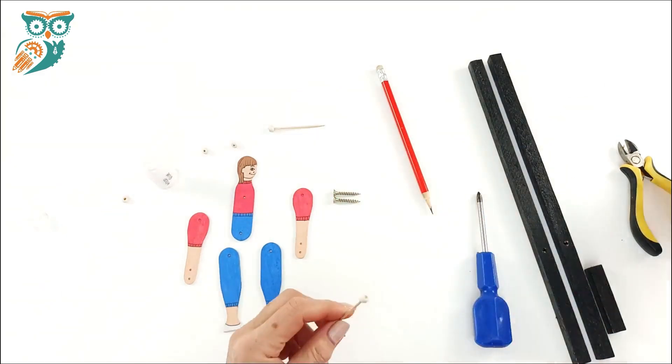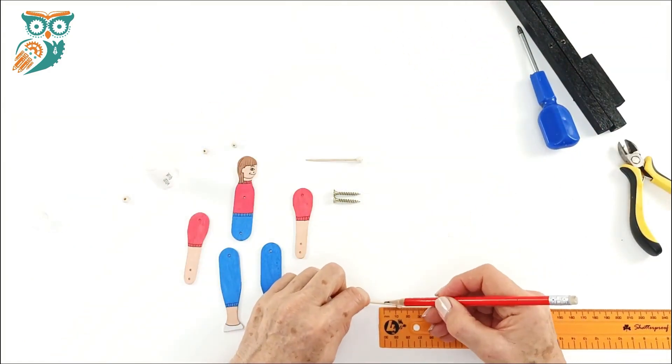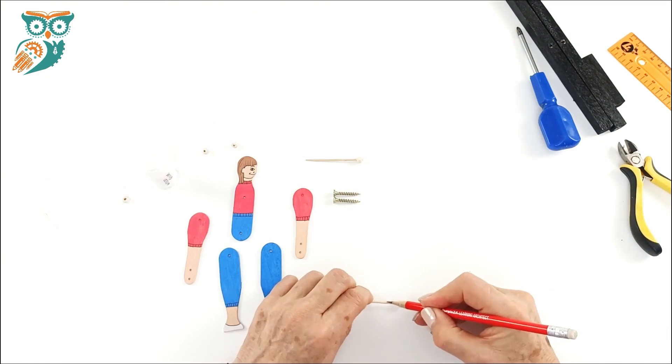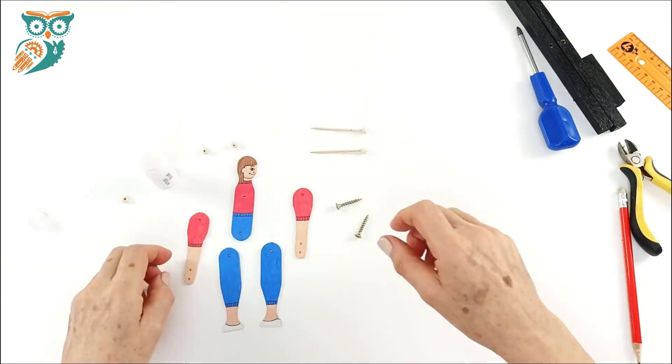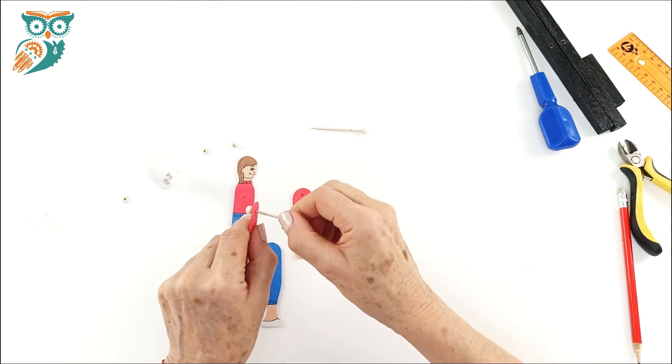We're going to let that dry for a couple of minutes and then we're going to come in and measure, so we want to measure it out so that it's 1 centimeter from the bottom of our wood bead. We're just going to make a little mark there with a pencil and we're going to start assembling our acrobat.